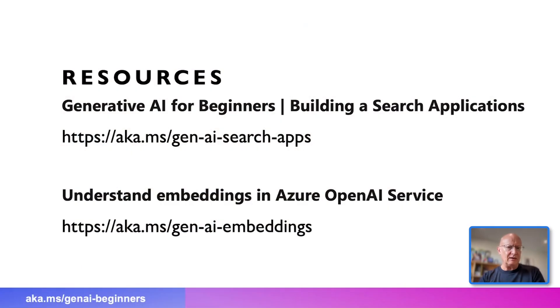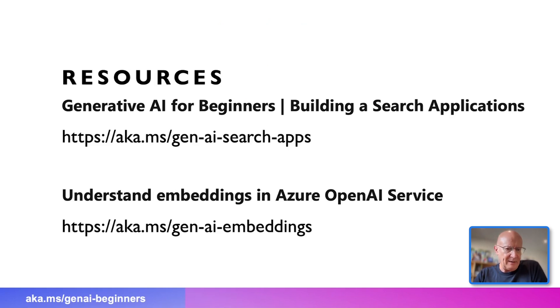Hopefully that makes sense and gives you an idea of how the application works. We've got a couple of resources: the search application just shown is linked in the repo, and there's a great set of Microsoft Learn content — particularly one about understanding embeddings and the Azure OpenAI service. Have a read through that. Hopefully this gives you enough to get started building search applications using embeddings, vectors, cosine similarity, and nearest neighbor to find relevant content in your datasets.